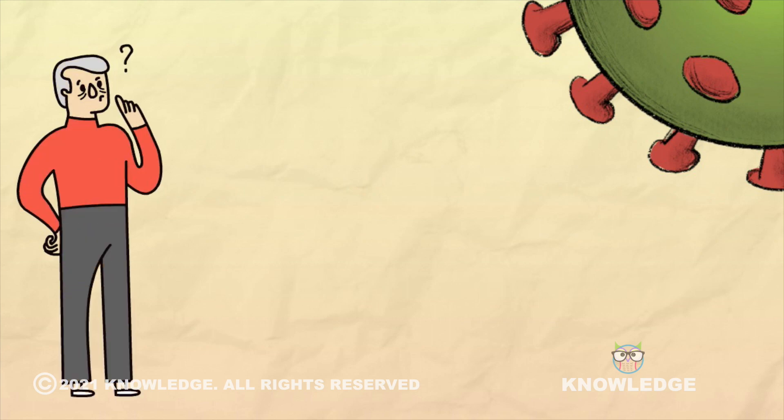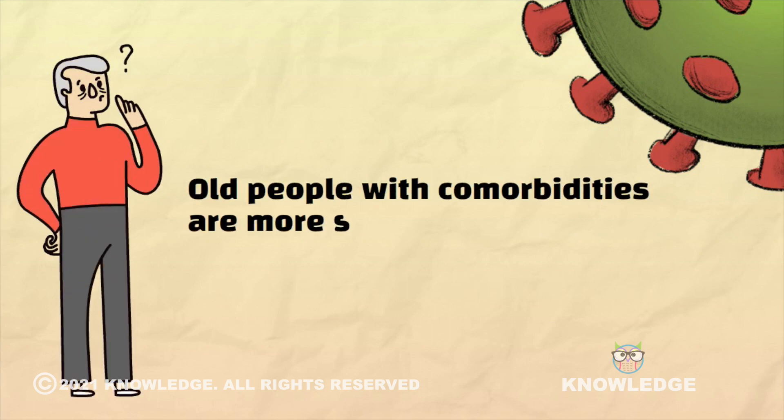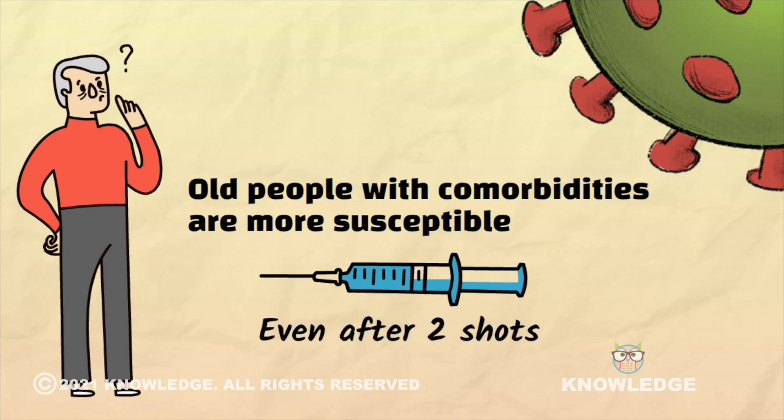Also, the elderly people and those who have comorbidities are more susceptible to the new Delta variant even if they are completely vaccinated. So it is a real variant of concern.